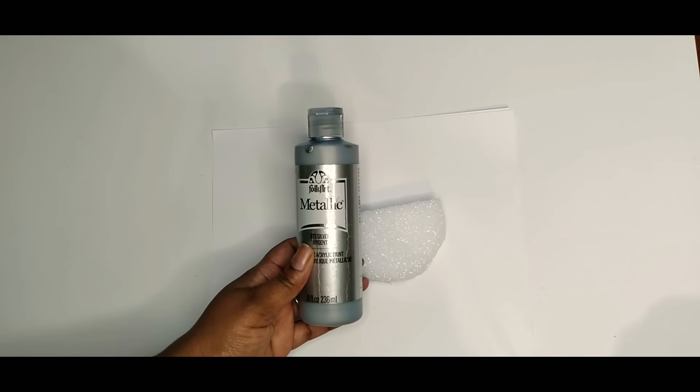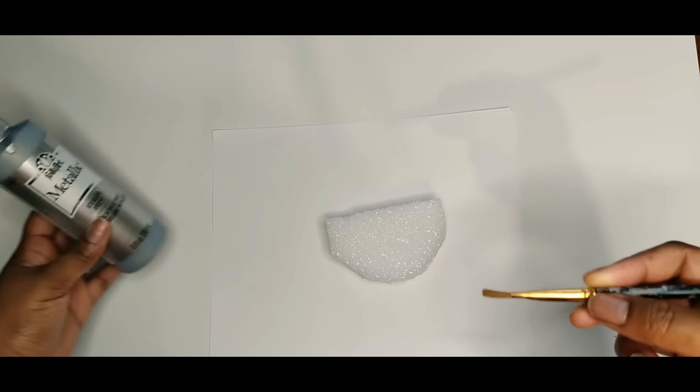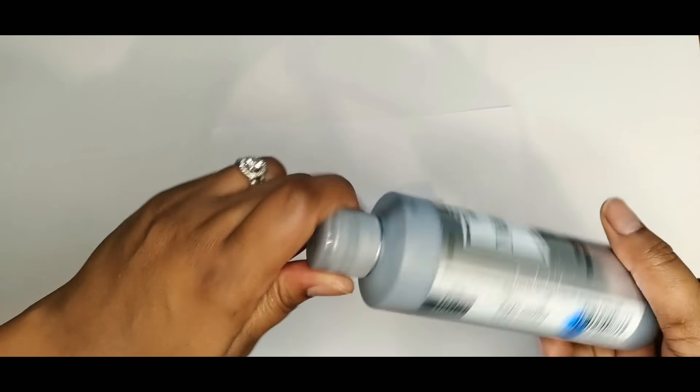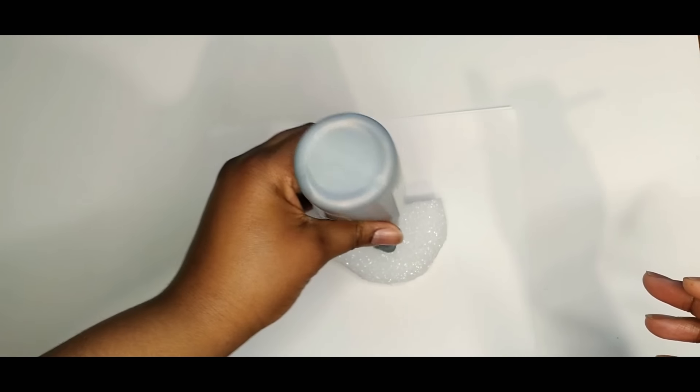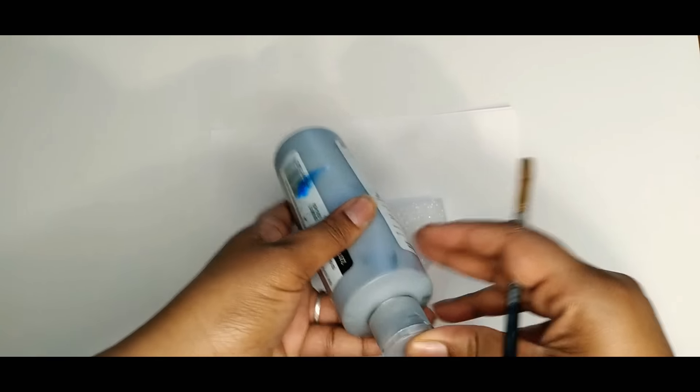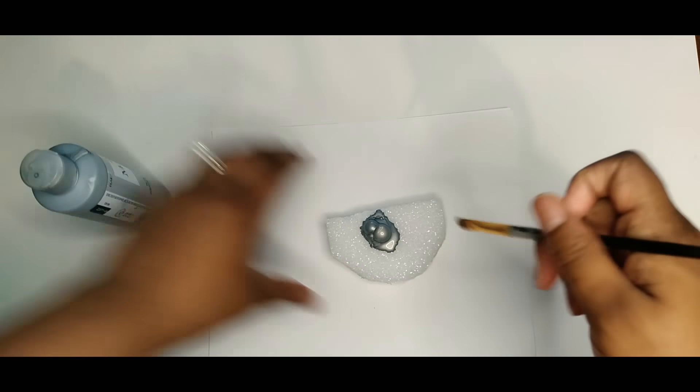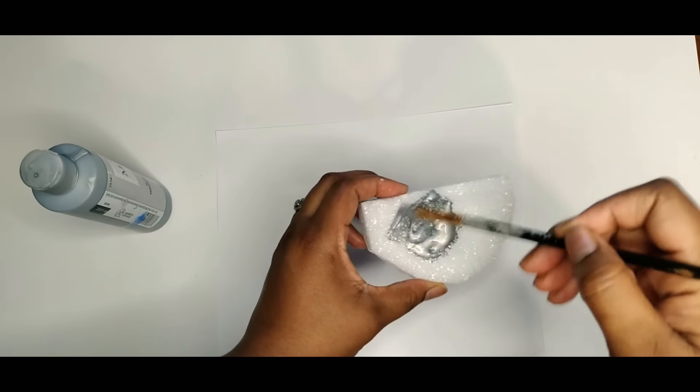Once my foam is all cut out, I'm going to go in with this Folk Art metallic paint in the color silver argent that I purchased from Walmart. I'll be applying this paint onto the top and bottom of the foam shape with this small craft brush.